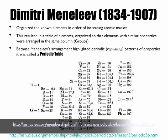Because Mendeleev's arrangement highlighted periodic patterns of properties — periodic meaning repeating — it was called the Periodic Table. So here we have a diagram from the website msnnucleus.org. You have the picture on your notes. This was how he organized the elements. Do you see some of the same patterns in his version of the Periodic Table as in what we call the modern-day Periodic Table?